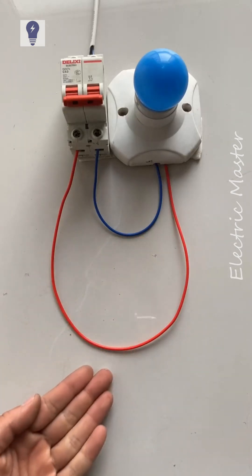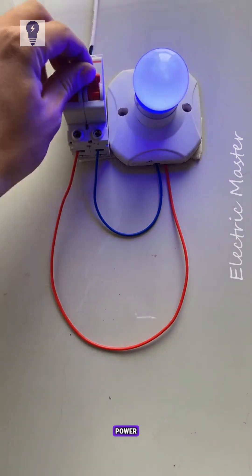Connect a neutral and live wire to the lamp. Power on lights up, power off dims.